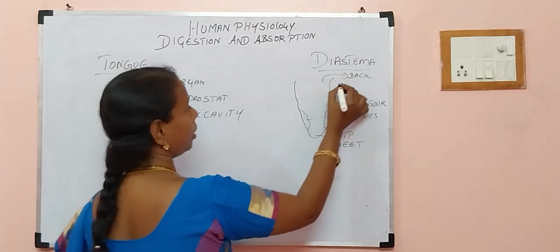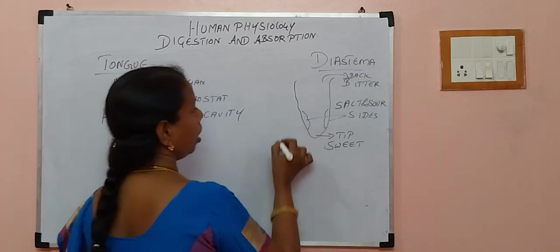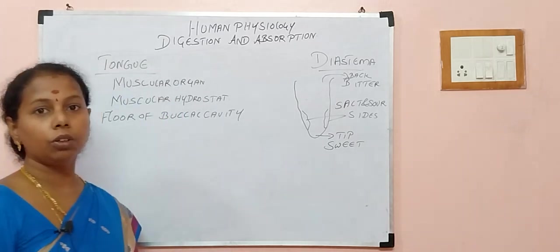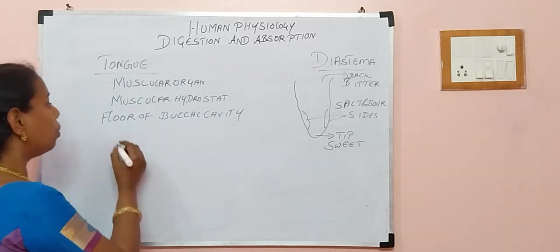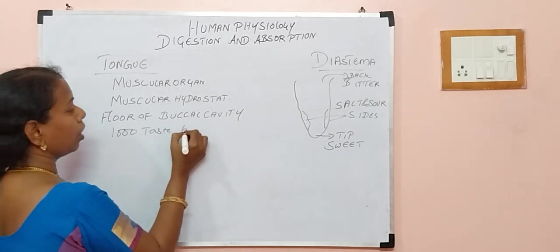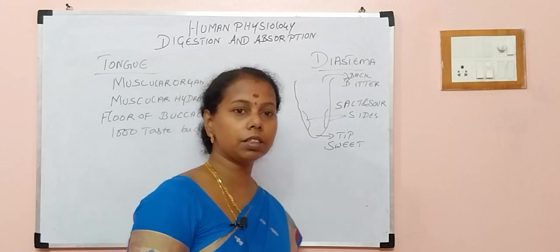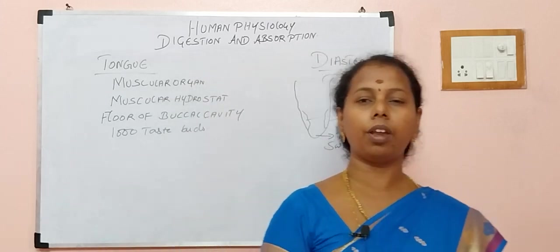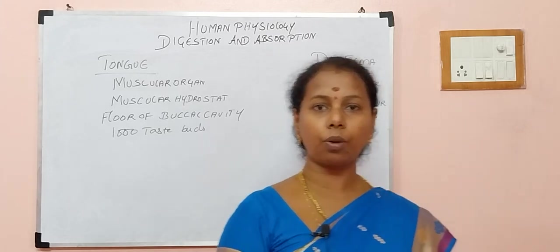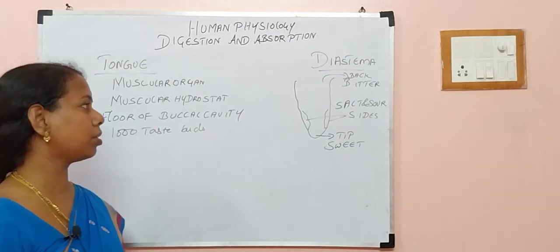At the back of the tongue we detect bitter taste. Metallic and alkaline tastes are distributed all throughout. You know, children, we have more than thousands of taste buds found in our tongue. Now assume Rakshita is eating jalebi, which is her favourite food item — where will she detect the taste of the jalebi? Can you post your answers in the comment box?